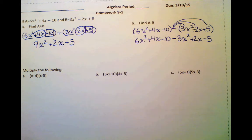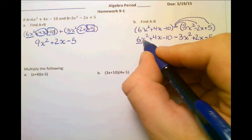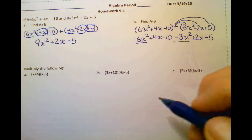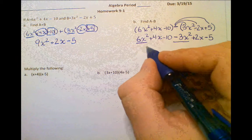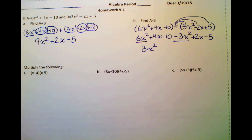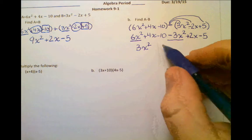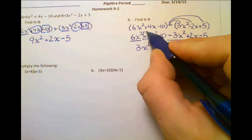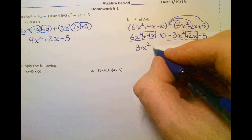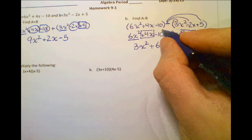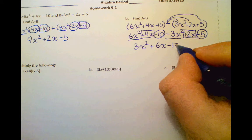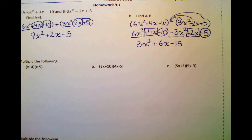Now we're going to do the same thing we did before — combine like terms. The x squared terms: 6 minus 3 is 3x squared. For the x terms: 4x plus 2x is 6x. And finally, minus 10 minus 5 gives us negative 15. And that will be our final answer.